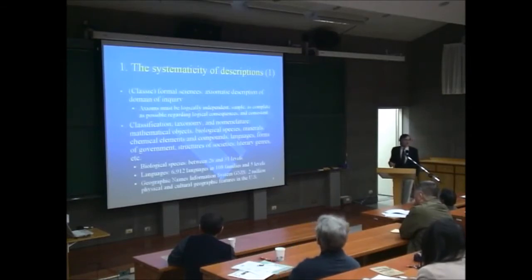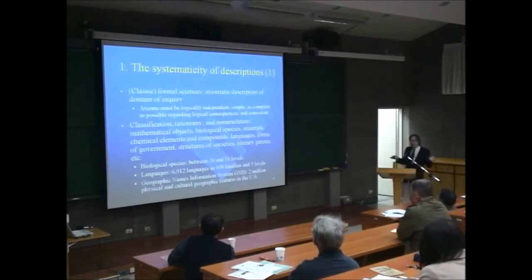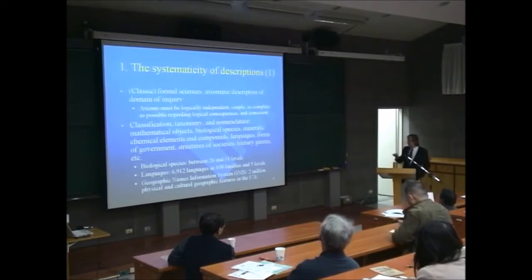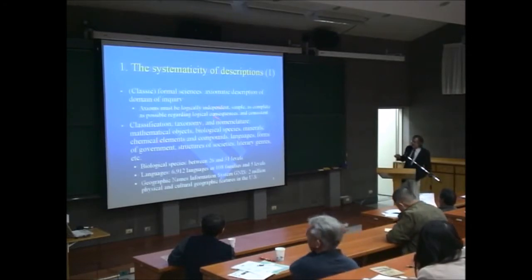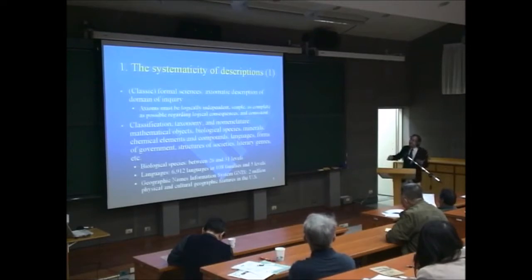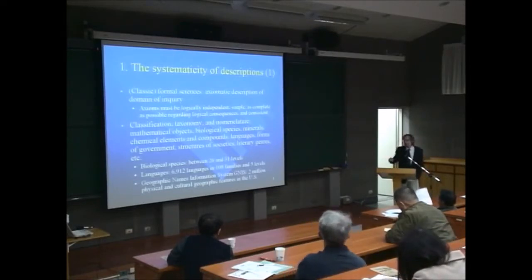In geography, the Geographic Names Information System lists 2 million physical and cultural geographic features in the United States alone. You need careful nomenclature to bring order to that. Scientific descriptions are extremely systematic — much more systematic than anything in everyday knowledge or the knowledge of other cultures.